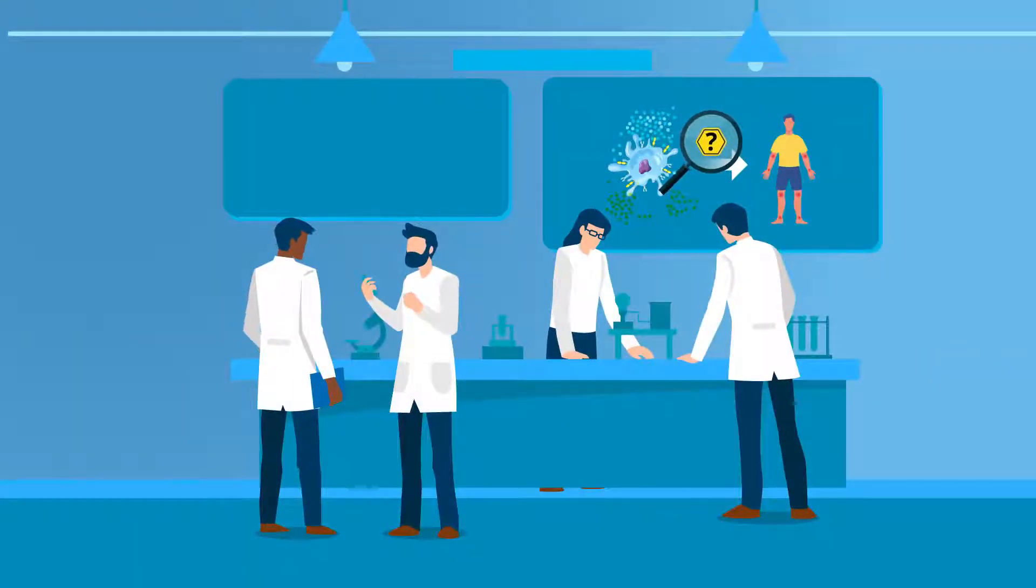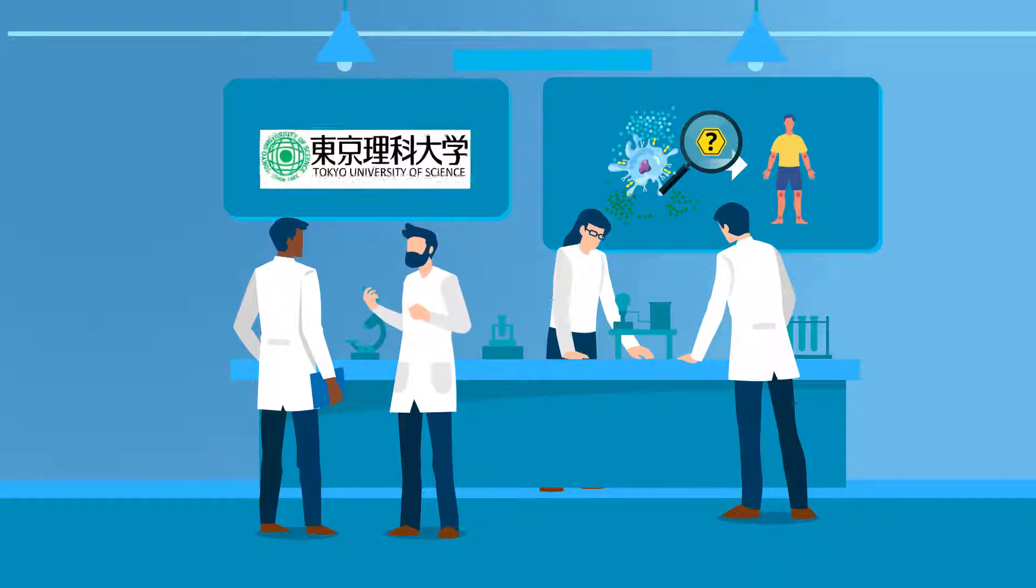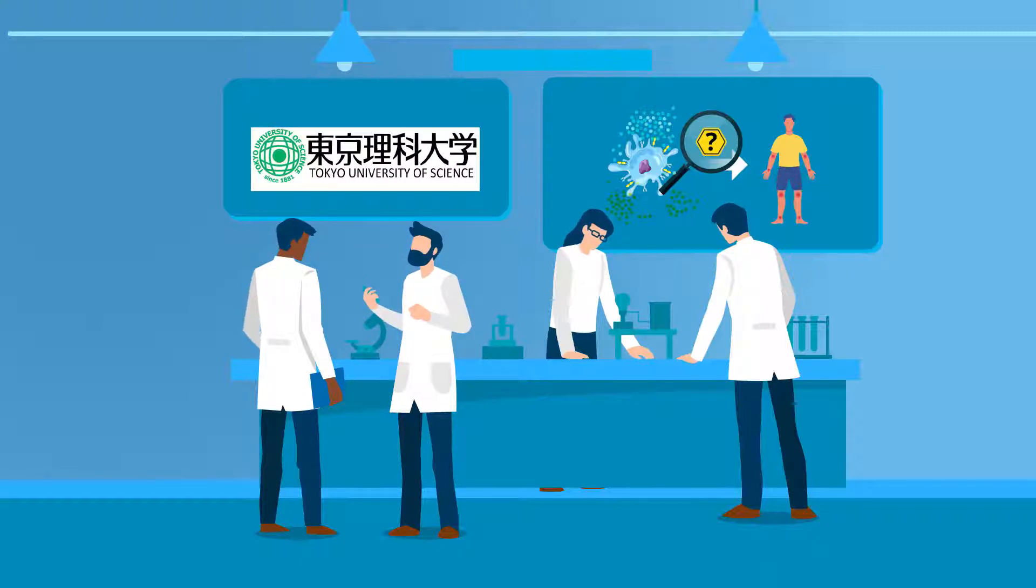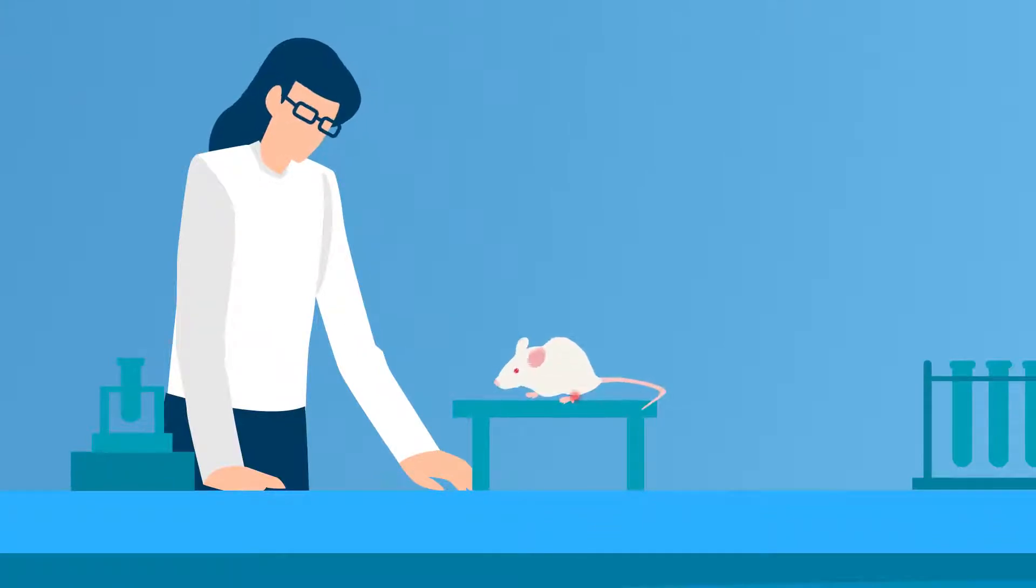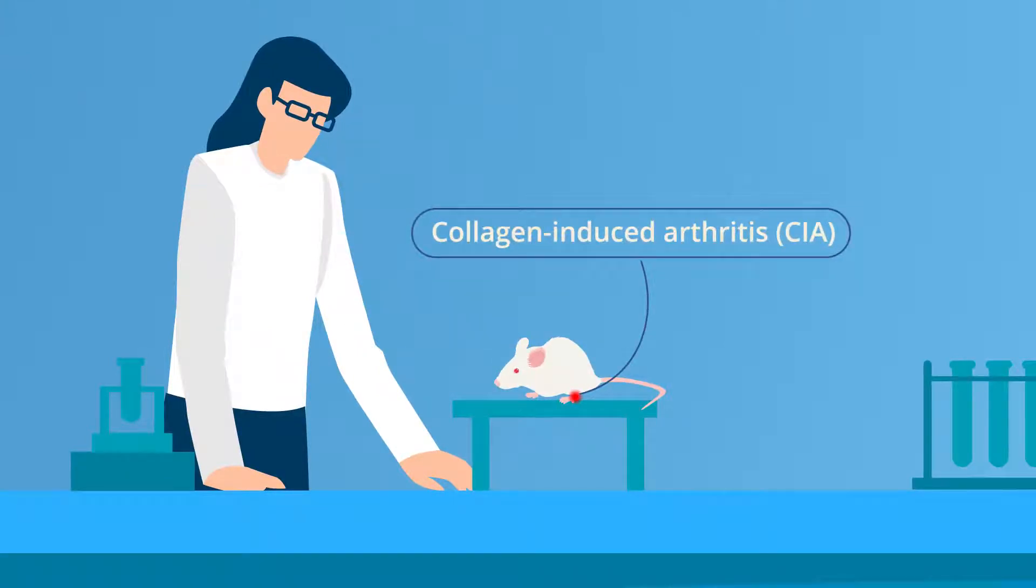To understand the role of TARM1 in autoimmune arthritis, researchers from Tokyo University of Science in Japan analyzed a mouse model of collagen-induced arthritis, or CIA.